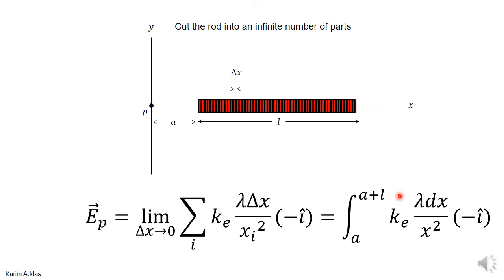Here you have the lambda, there's the lambda, there's the ke, there's the ke, the Δx becomes dx, xi² becomes x², and the minus i is as it is minus i.